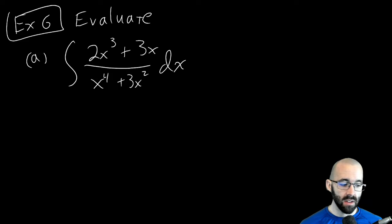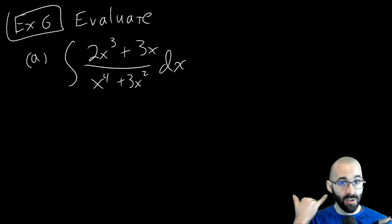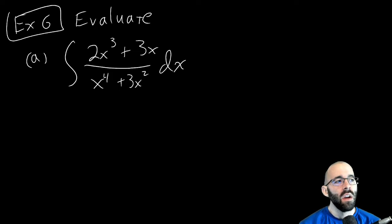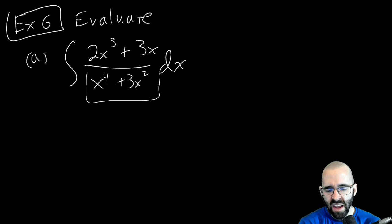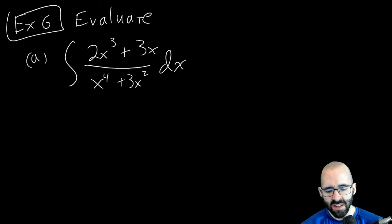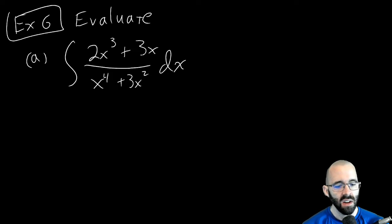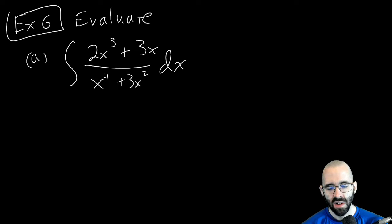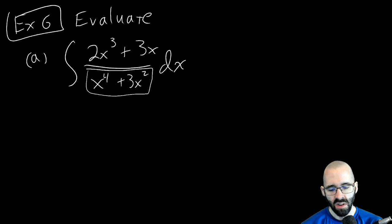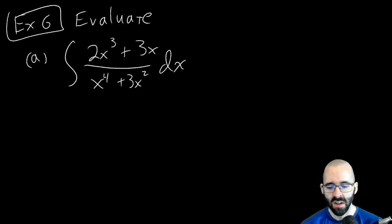There's no quotient rule for integrals. Long division won't help since the denominator's degree is higher than the numerator's. Splitting into two fractions won't help either. The key observation is: the denominator is a polynomial with exponents 4 and 2, while the numerator has exponents 3 and 1 — so maybe a u-substitution will work. Let's try it.